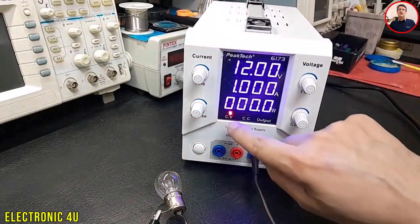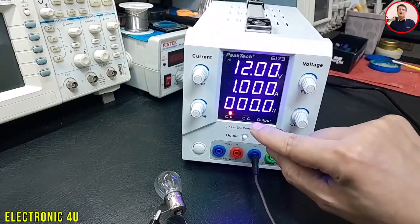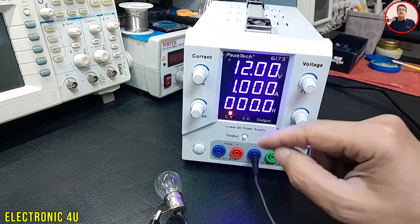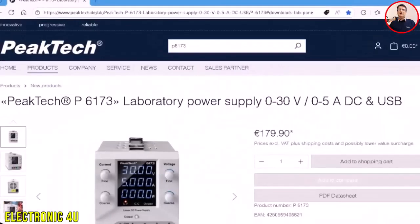Result: CV means constant voltage and the current depends on the load. CC means constant current and the voltage drops as needed to keep the current limited. One interesting feature of this power supply is that it can be controlled and programmed from a computer. Let's see how we can do this.